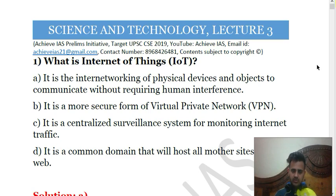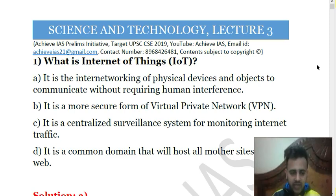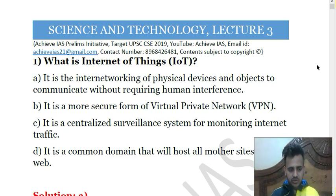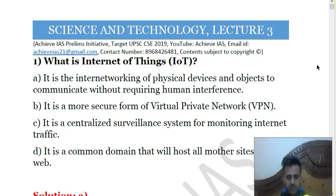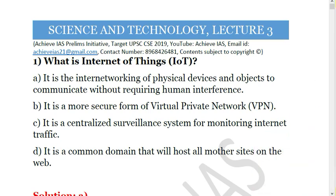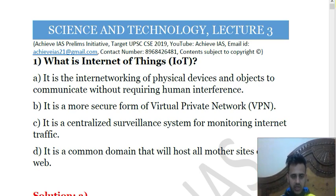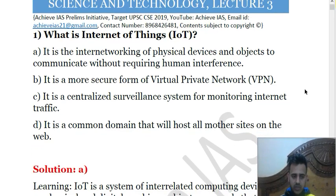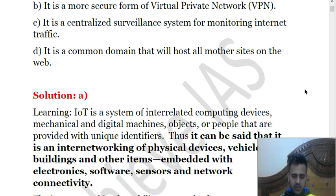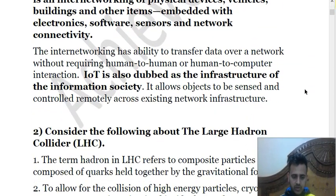The first question is: what is the Internet of Things? Option A: it is the internetworking of physical devices and objects to communicate without requiring human interference. Option B: it is a more secure form of virtual private network. Option C: it is a centralized surveillance system for monitoring internet. Option D: it is a common domain that will host all websites on the web. The answer is A — the Internet of Things is basically internetworking between different physical devices without the need of human interference.